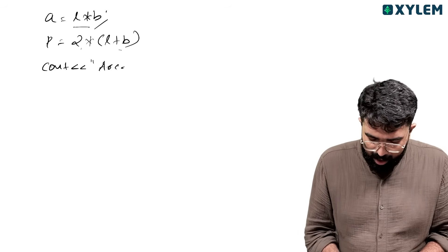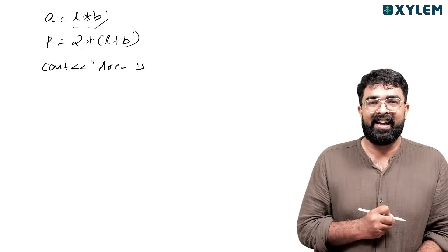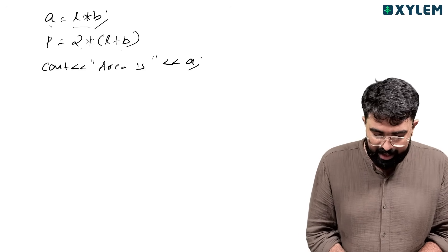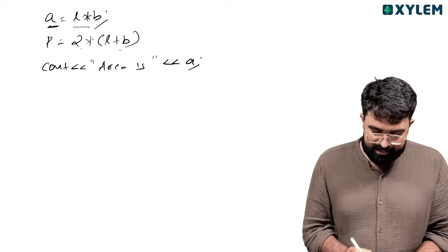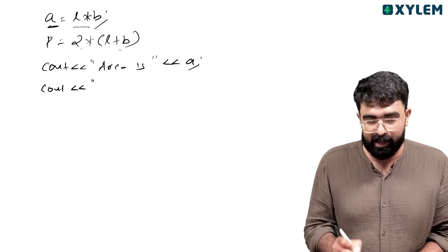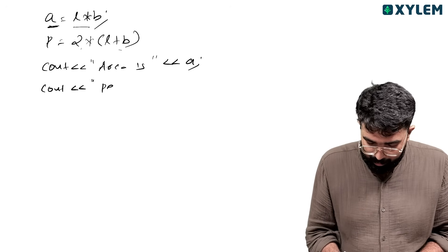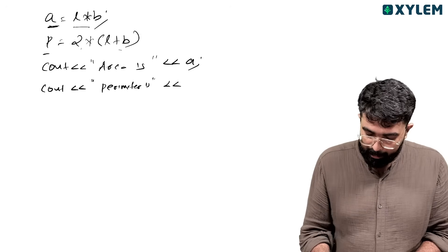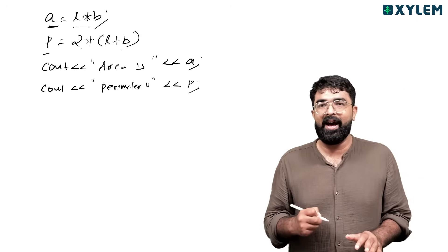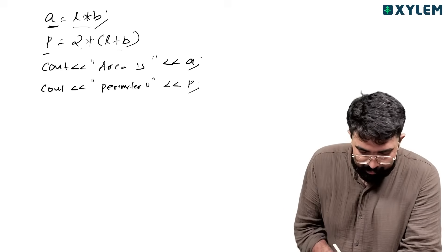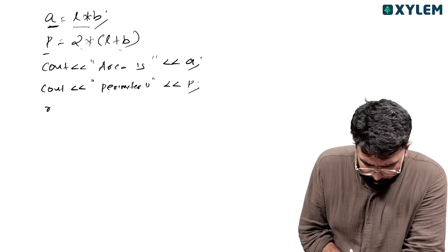Area is... area is a. Perimeter is perimeter is P. Clear. Next, return, close — okay.